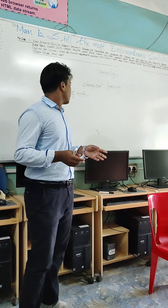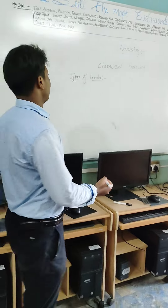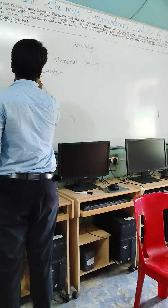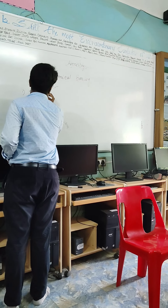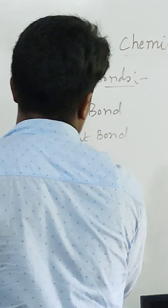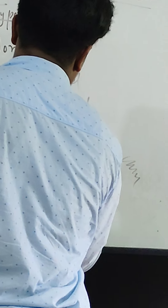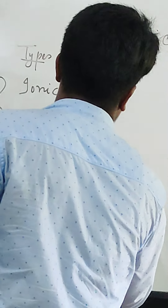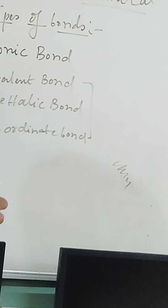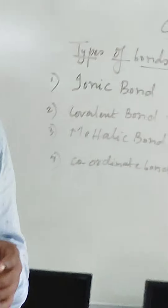So, in chemical bonding, how many types of bonds are there present? There are likely three bonds. Actually there are four types of bonds, but generally we consider coordinate bonds into covalent bonds only.